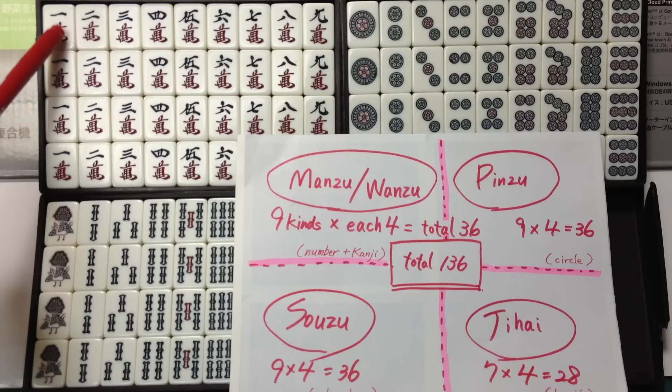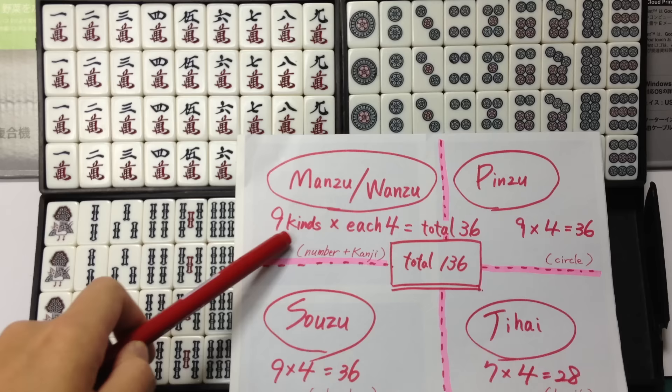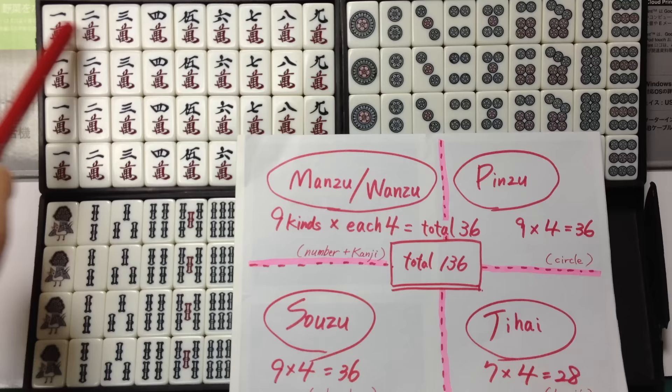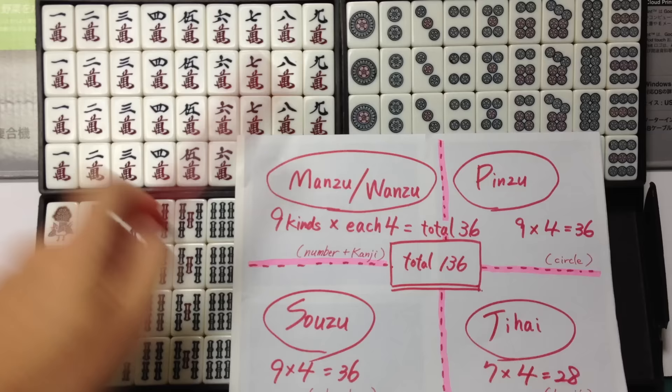One, two, three, four, five, six, seven, eight, nine — nine kinds. Each four. Total 36.